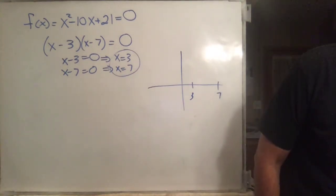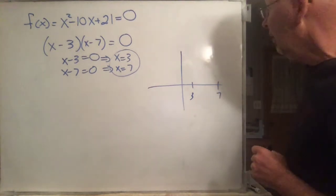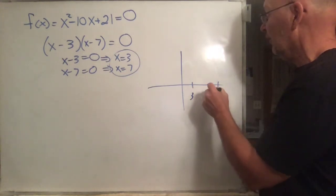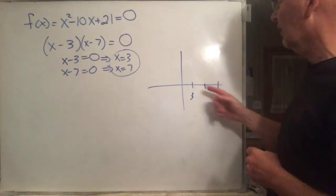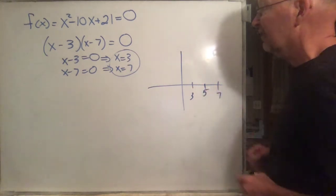Next question: What are the coordinates of the vertex of the graph? Well, recall that the x-coordinate of the vertex lies halfway between the x-intercepts. So 3, 4, 5, 6, 7 - 5 is halfway in between.